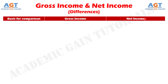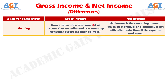Difference number 1: gross income is the total of all the receipts less expenses, which an individual or a company generates during the financial year. Conversely, net income is the balance amount — it remains with the company after deducting all the expenses and taxes.